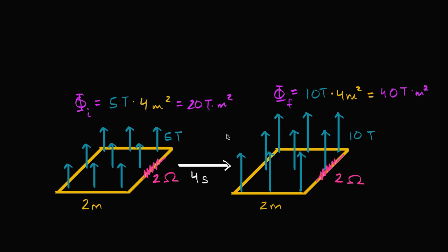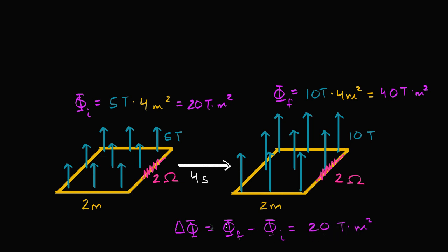So what is our change in flux? Our change in flux — which is our final flux minus our initial flux — is going to be 40 tesla meters squared minus 20 tesla meters squared, which is just going to be 20 tesla meters squared. So we've figured out the change in flux. We know the change in time is four seconds, and using that we can now figure out what the induced voltage is going to be.